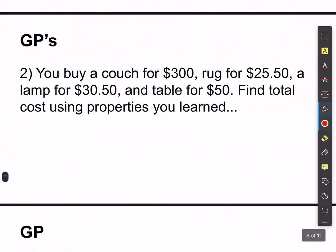Guided practice — this should be in your notes. If you buy a couch for $300, a rug for $25.50, a lamp for $30.50, and a table for $50, can you find the total using properties you've just learned? What I like to do is combine things that are easy to combine.